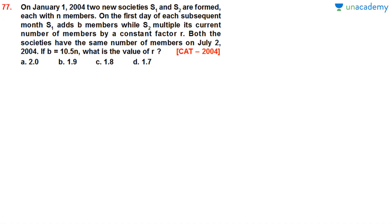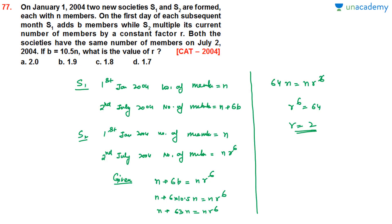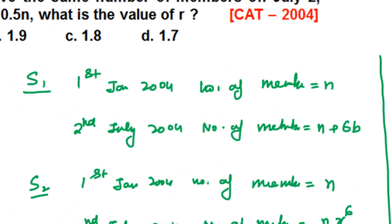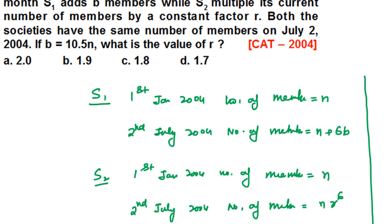Solution to Question 77: On January 1, 2004, both S1 and S2 have n members. From January to July 2, 2004 is 6 months. For society S1, which adds b members each month, the number of members on July 2, 2004 = n + 6b. For society S2, which multiplies by factor r each month, the number of members = n·r^6.